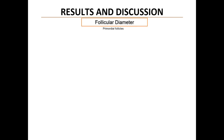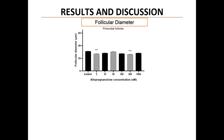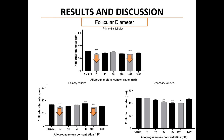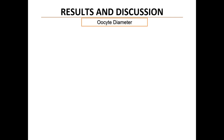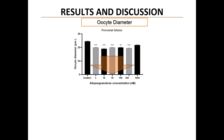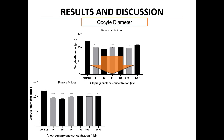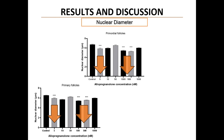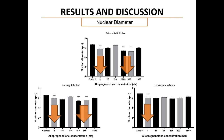In terms of follicular diameter, Allo caused a reduction in the diameter of primordial follicles at 5 nM and 500 nM concentrations, as well as in primary follicles. In secondary follicles, it caused a reduction at 50 nM, 100 nM and 500 nM. On the other hand, it caused an increase in the diameter of primary follicles at 100 nM. When measuring oocyte diameters, a decrease was observed at most concentrations compared to the control, except at 1000 nM in primordial and secondary follicles, and 100 nM in primary follicles. Nuclear diameters were reduced in primordial and primary follicles at several concentrations, and secondary follicle nuclei showed a decrease at 5 nM.